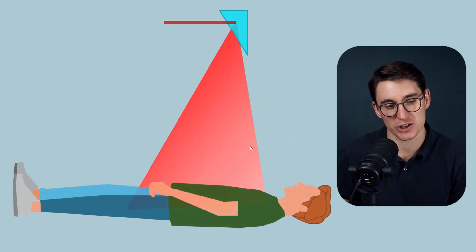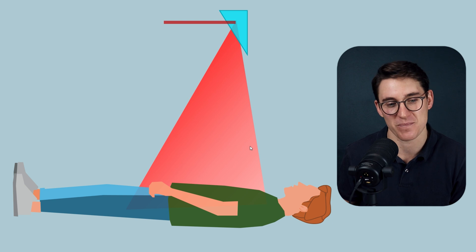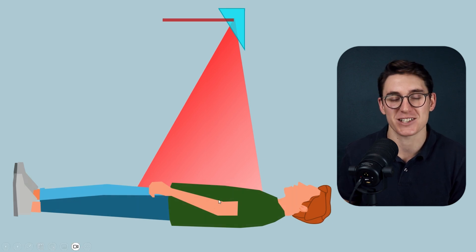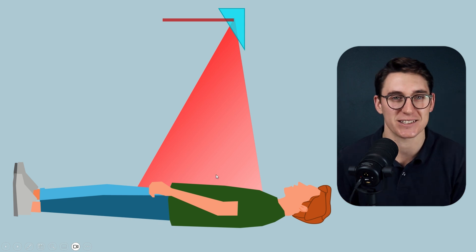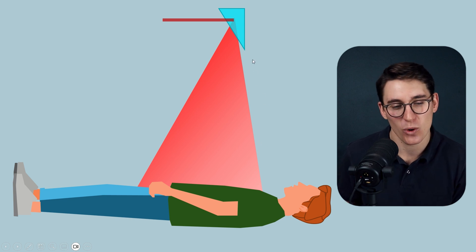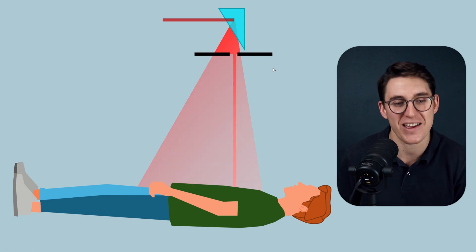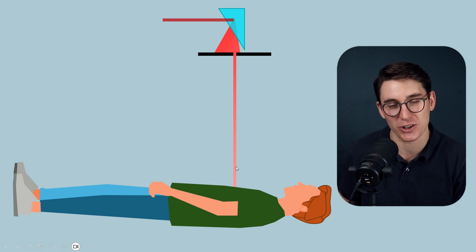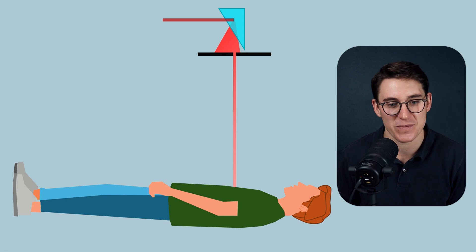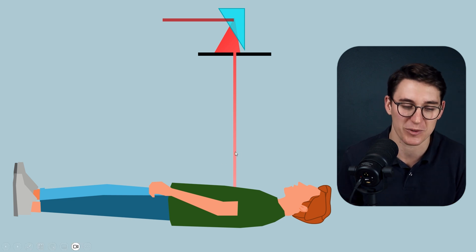In CT imaging, the anode heel effect works slightly differently. In x-ray imaging, you'd place the more intense part of the beam over a denser region to even out the fluence reaching the detector. In CT imaging, the anode lies parallel to the x-y plane we are imaging, and we collimate the beam very tightly — creating a very narrow beam width. The anode heel effect doesn't play much of a role because we've got such a narrow beam in the z-axis. The anode heel effect also doesn't happen in the x-y plane because that anode angle stays the same parallel to the beam being generated.